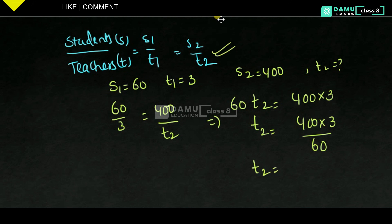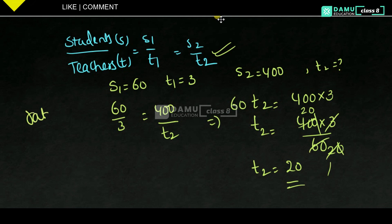Simplifying: 3 ones are 3, 3 twos are 6, and dividing by 60 — the zeros cancel — gives 20. So the number of teachers for 400 students is 20 teachers. Like this you can calculate using ratios. Ratios are equal in both cases.